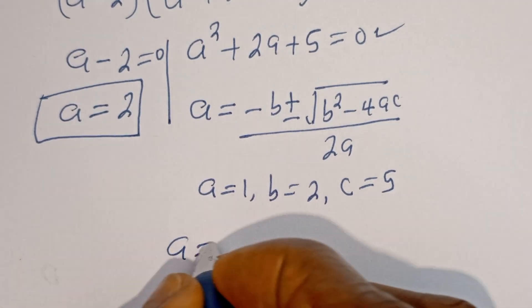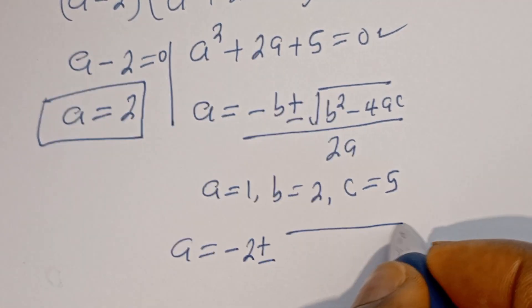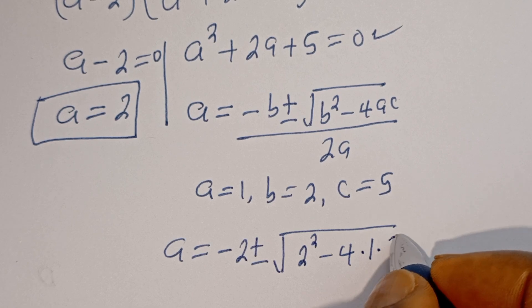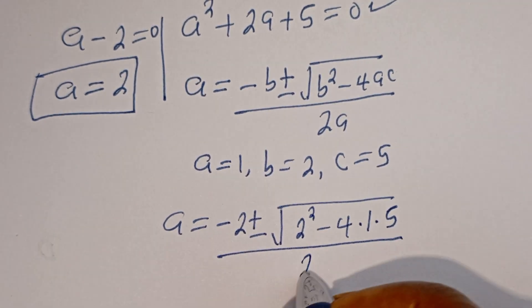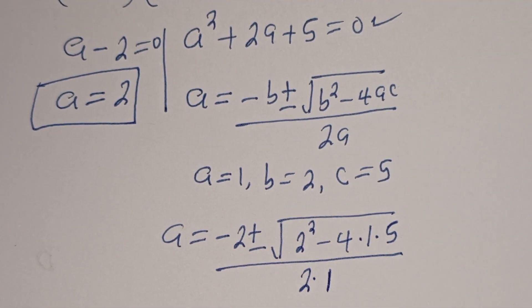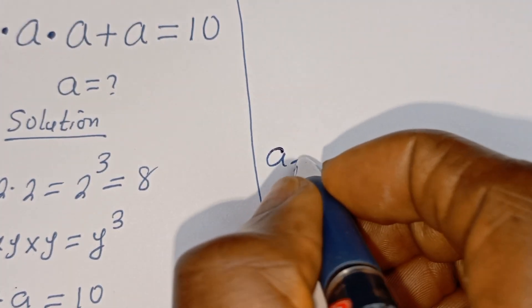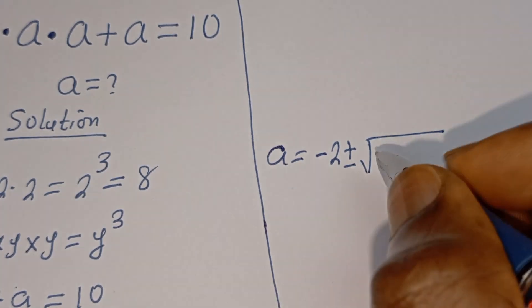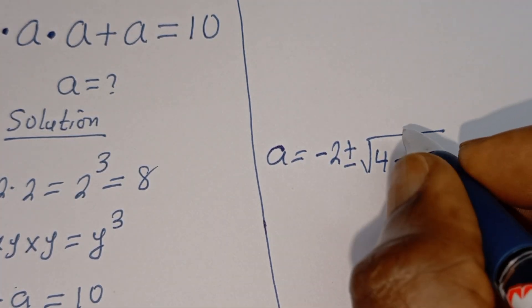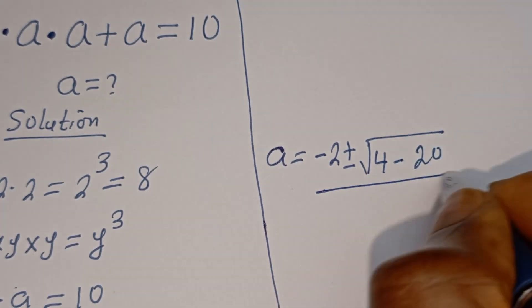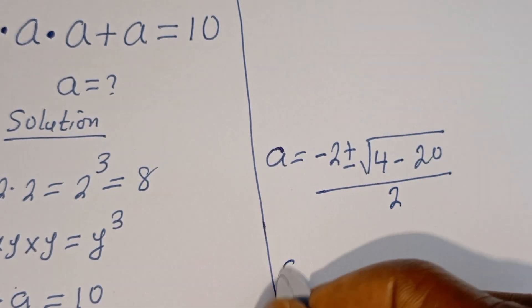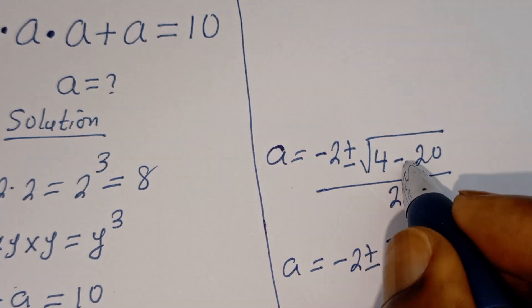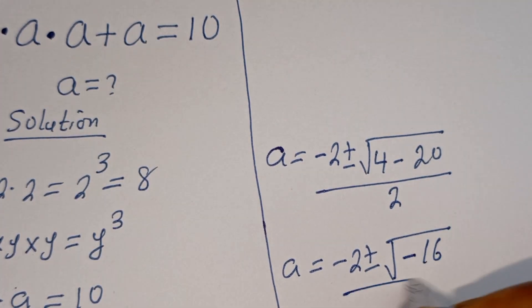Applying the quadratic formula, A equals negative b plus or minus square root of b² minus 4ac, divided by 2a. Substituting: A equals negative 2 plus or minus square root of 2 squared minus 4 times 1 times 5, divided by 2 times 1. That gives negative 2 plus or minus square root of 4 minus 20, divided by 2, which is square root of negative 16.